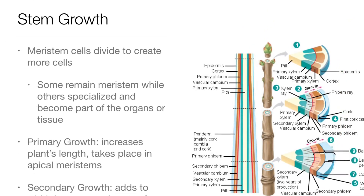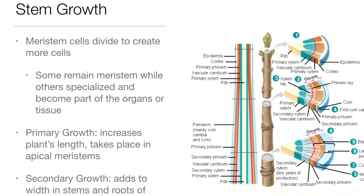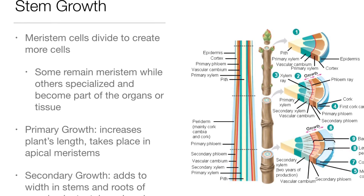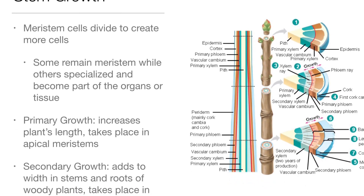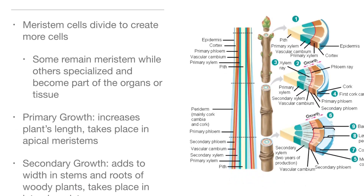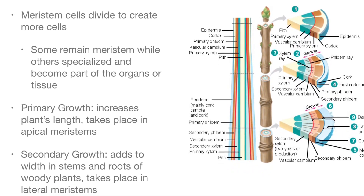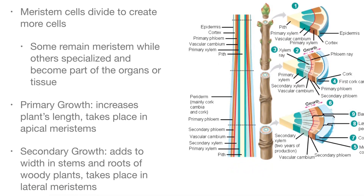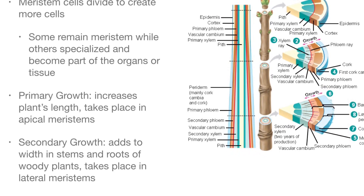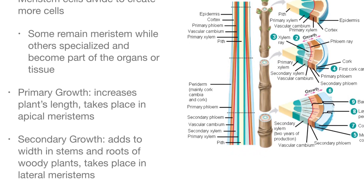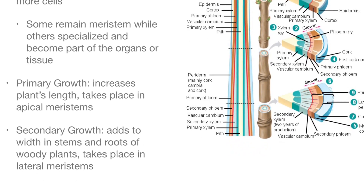Stem growth: meristems divide to create more cells. Some remain as meristem while others specialize and become part of organs or tissue. Primary growth increases a plant's length and takes place in apical meristems. Secondary growth adds to the width of stems and roots in woody plants and takes place in lateral meristems.